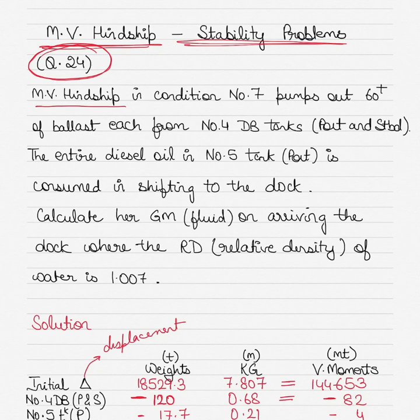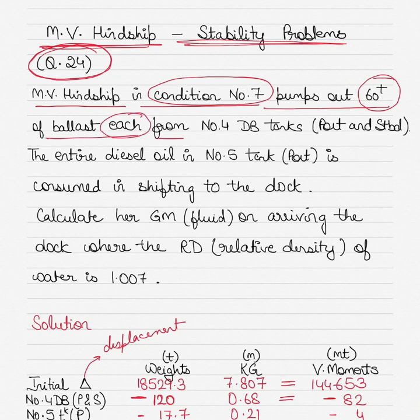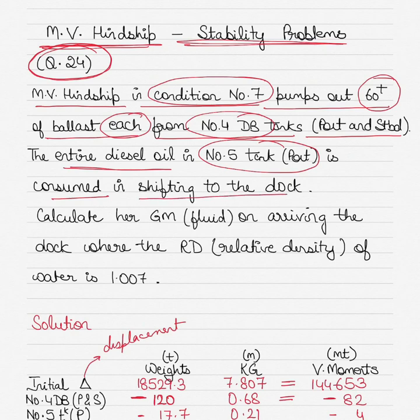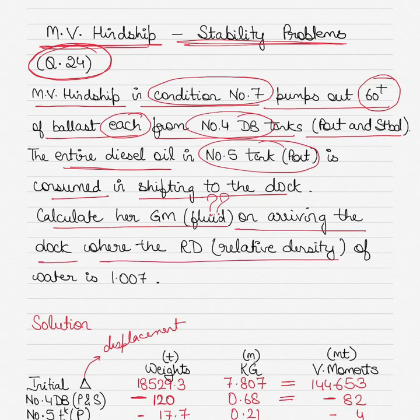Motor vessel Hintship is in condition number 7. It pumps out 60 tons of ballast each from number 4 double bottom tanks port and starboard. I'm circling the important bits of information in the question, because in the exam this is what you should be doing so you don't miss essential information. The entire diesel oil in number 5 tank port side is consumed in shifting to the dock. You have to calculate her GM fluid — that is GM corrected for free surface effect — on arriving at the dock where the relative density of water is 1.007.